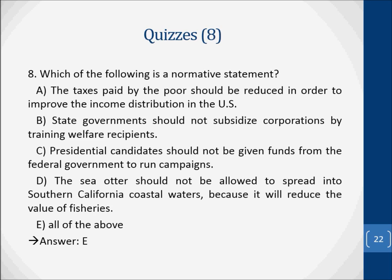Question eight: which of the following is a normative statement? A. The taxes paid by the poor should be reduced in order to improve the income distribution in the U.S. B. State governments should not subsidize corporations by training welfare recipients. C. Presidential candidates should not be given funds from the federal government to run campaigns. D. Sea water should not be allowed to spread into Southern California coastal waters because it will reduce the value of fisheries. E. All of the above. The answer is E — all of the above are normative statements.